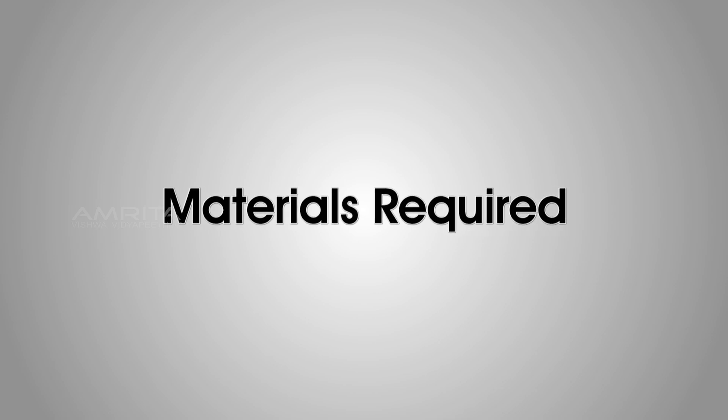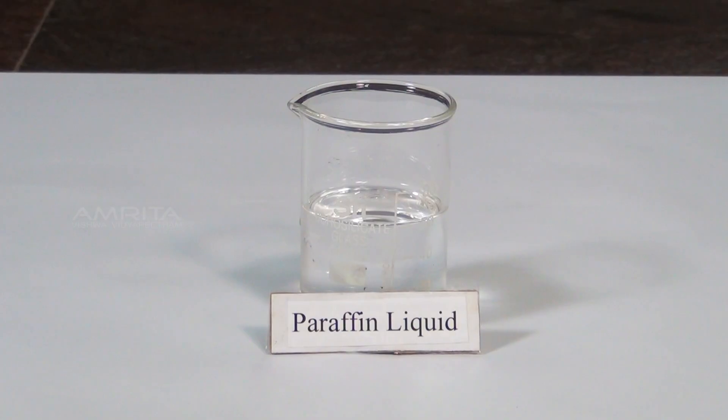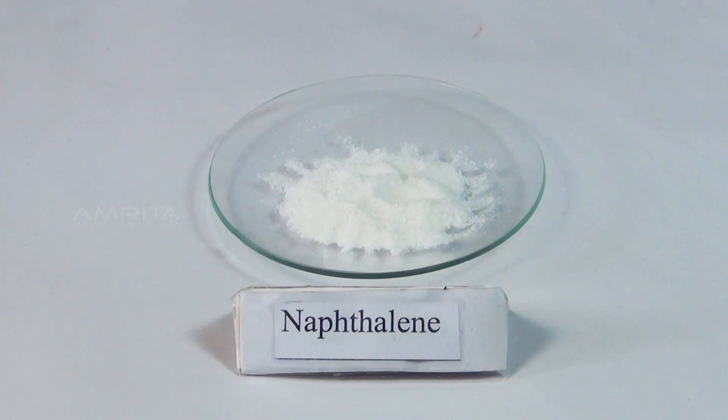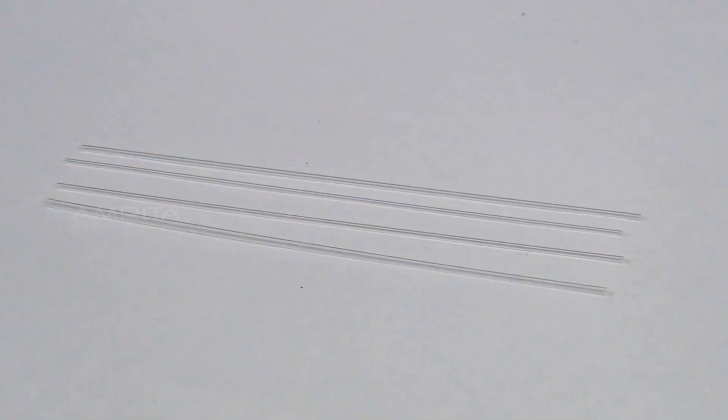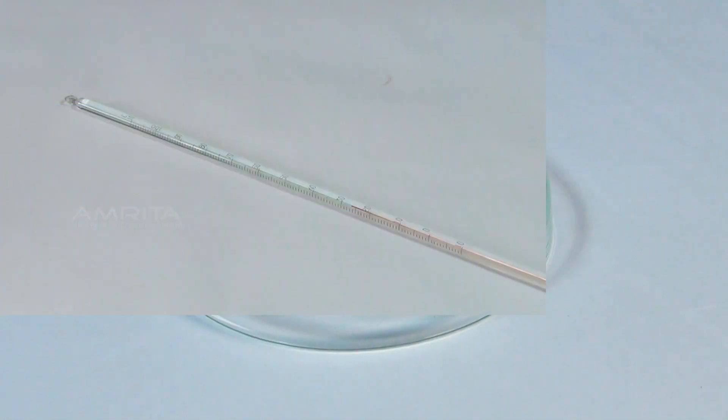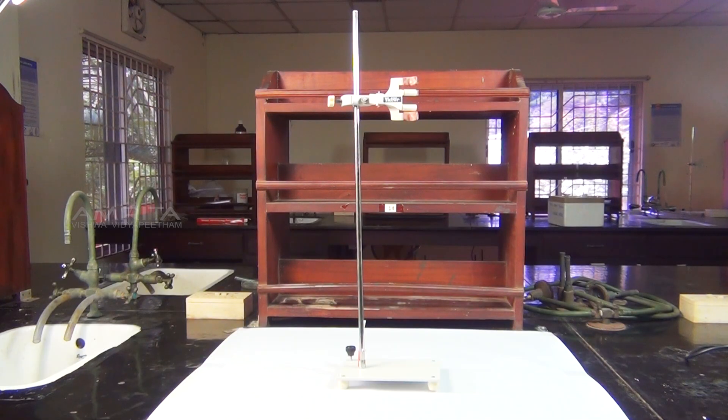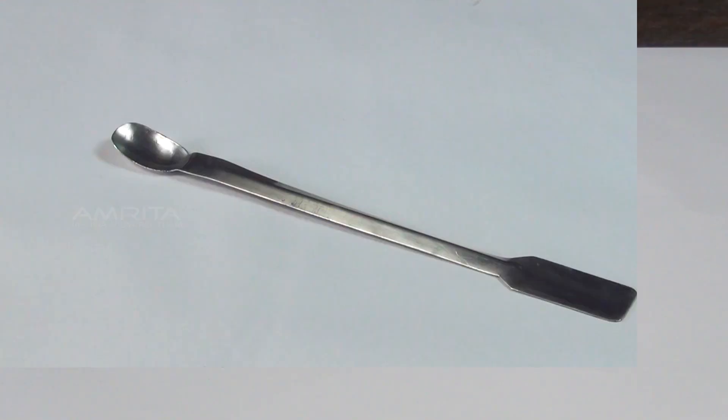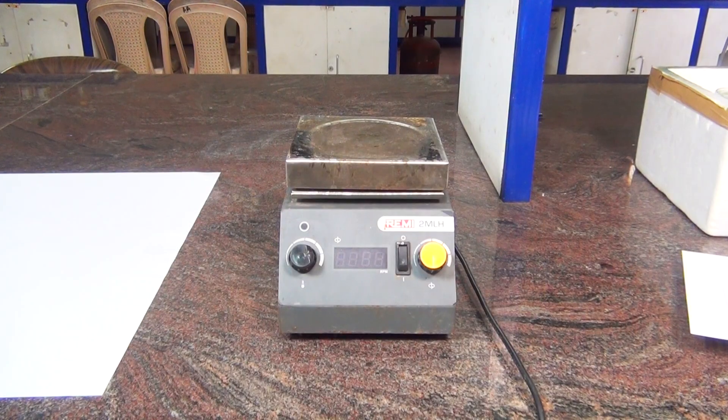Materials Required: Liquid paraffin in a 100ml beaker, powdered naphthalene, thin walled capillary tube of approximately 8-10cm length and 2mm diameter, thread, glass plate, thermometer, stand with clamp, stirrer, spatula, and hot plate.